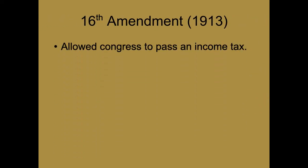The 16th Amendment allowed Congress to pass an income tax. The Supreme Court had declared an income tax unconstitutional, so to override that ruling, we had to pass a constitutional amendment specifically giving Congress the power to pass an income tax. Congress had the power to tax, but for whatever reason the Supreme Court ruled that an income tax was not in their power — well, it is now because of the 16th Amendment.